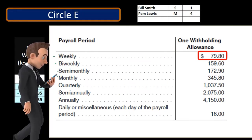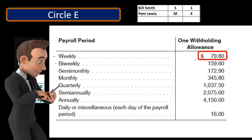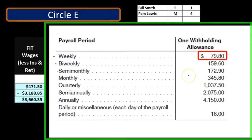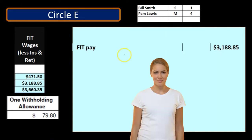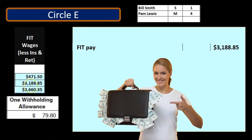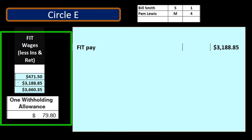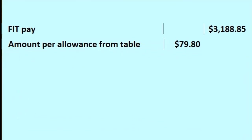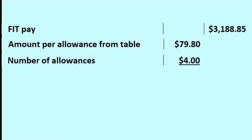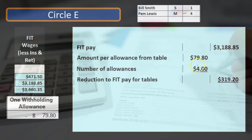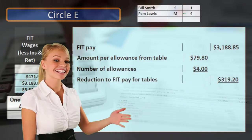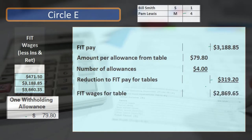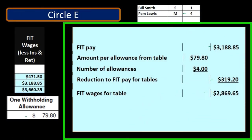To do this we first look at the Circular E table to see what the allowance amount is. We're currently on a weekly pay period, so the allowance is $79.80 per allowance. We then take our FIT wages of $3,188.85 and calculate the total allowances: $79.80 times four allowances equals $319.20. Subtracting that from the FIT wages gives us $2,869.65, which is the number we'll use for the percentage tables.